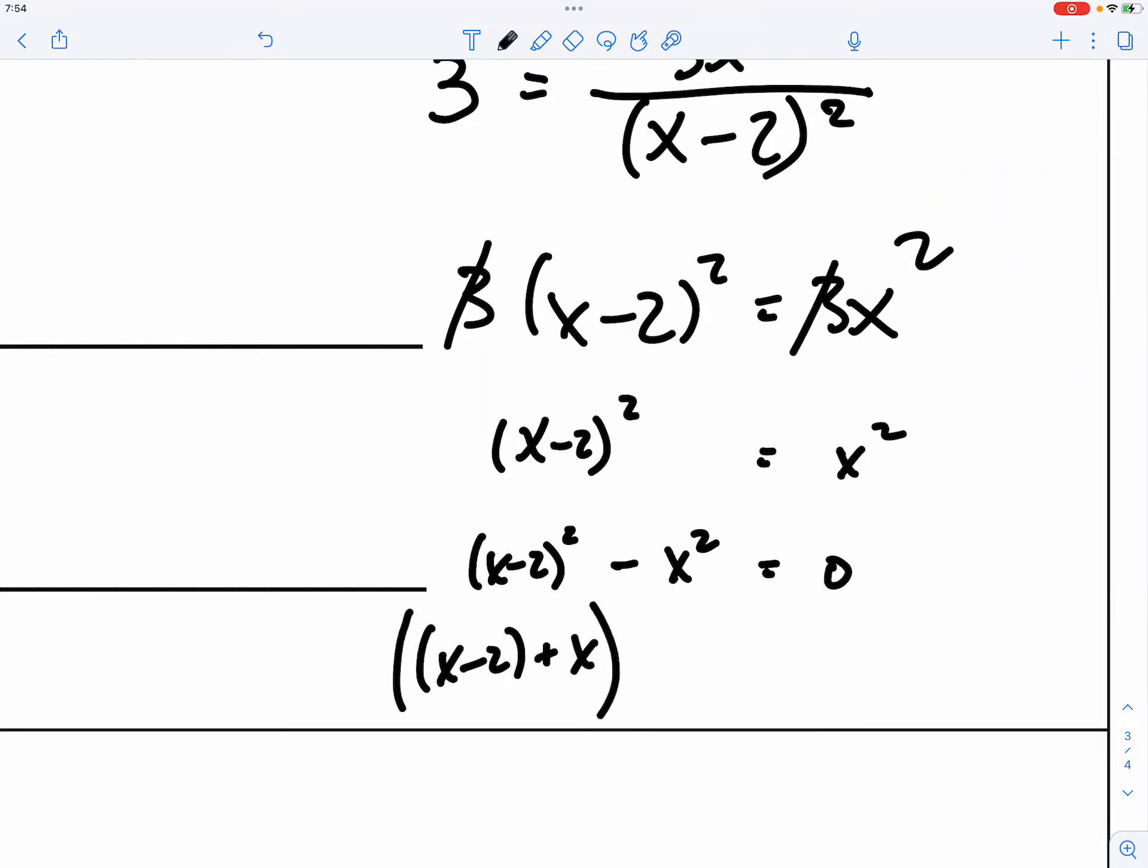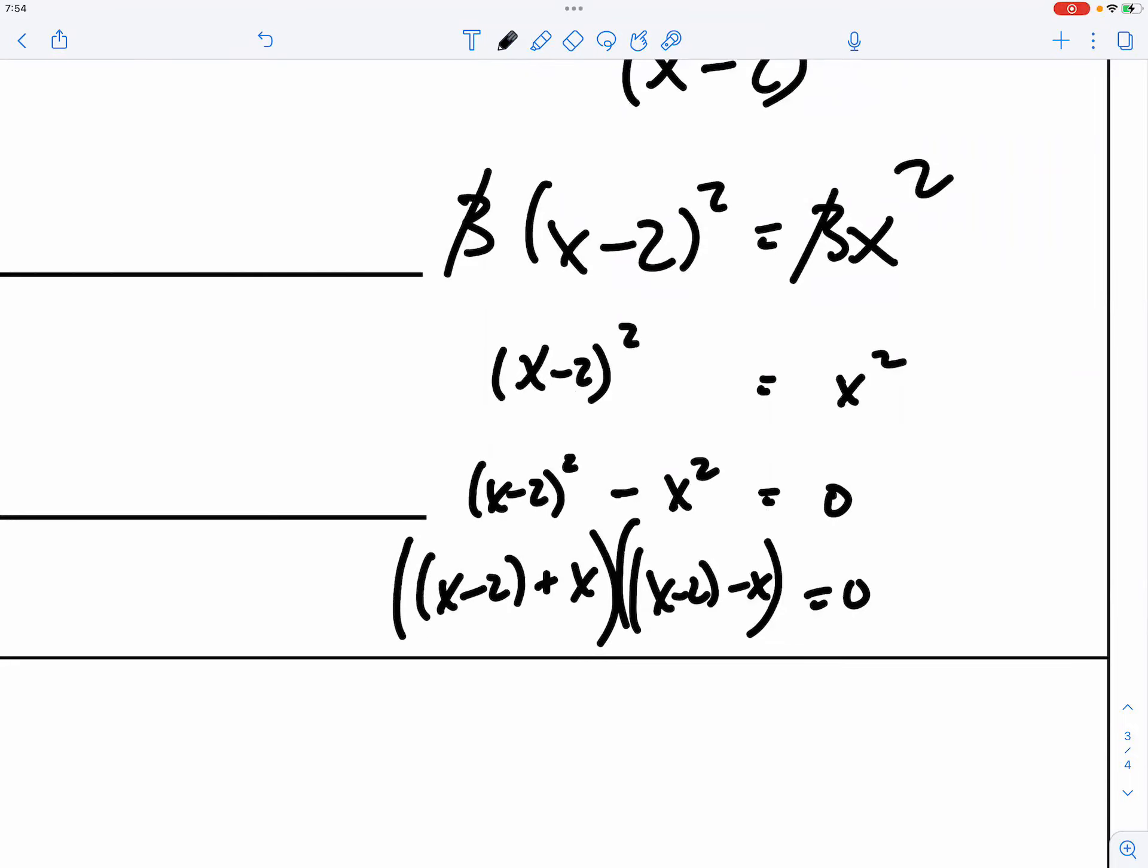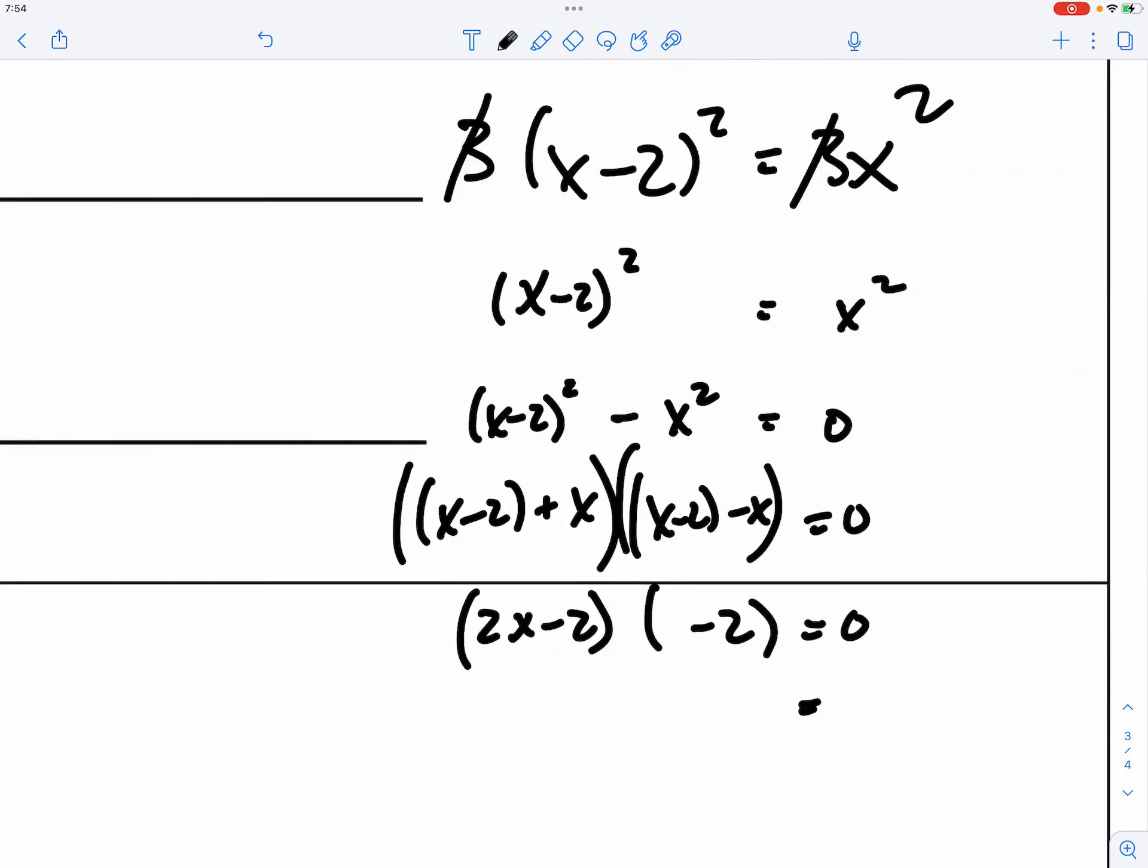So, it's like a plus b, a minus b. Okay? So, that means you have 2x minus 2 here. And then, you have just negative 2 right here. So, you can divide the negative 2 over. So, 2x minus 2 is equal to 0. So, 2x is equal to 2. x is equal to 1. So, if you actually do it.